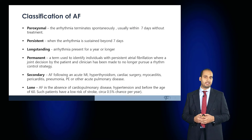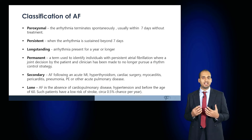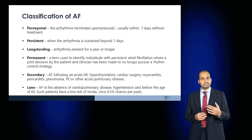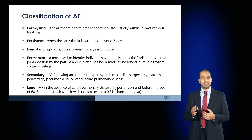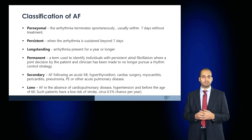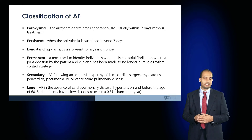How do we classify atrial fibrillation? Paroxysmal AF is where the arrhythmia terminates spontaneously, usually within seven days without treatment. Persistent AF is sustained beyond seven days. Long-standing AF is present for more than a year. Permanent AF is a term used when a joint decision between patient and clinician is made to no longer pursue a rhythm control strategy, as it is generally refractory to interventions.